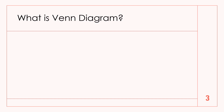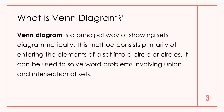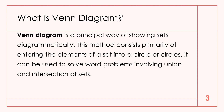What is a Venn diagram? A Venn diagram is a principal way of showing sets diagrammatically. This method consists primarily of entering the elements of a set into a circle or circles. It can be used to solve word problems involving union and intersection of sets.